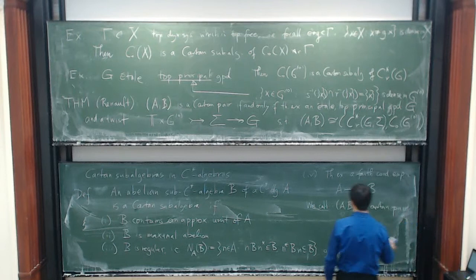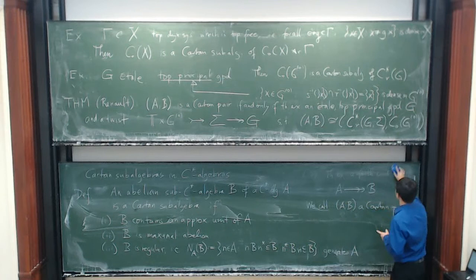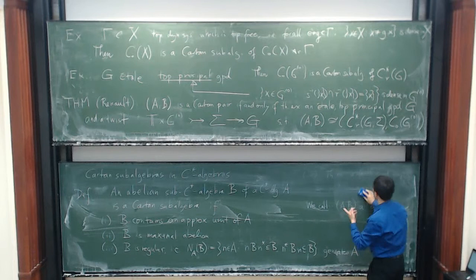Of course, if the twist is trivial in the sense that the extension is trivial, then you just get the usual groupoid C*-algebra.